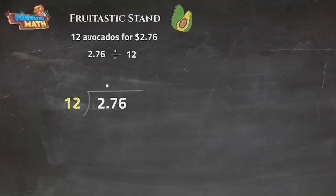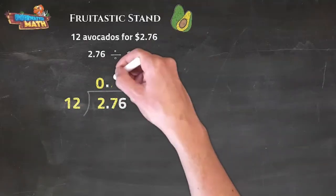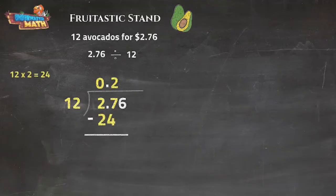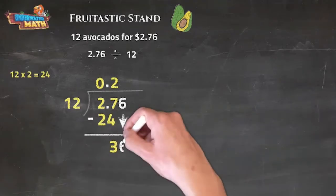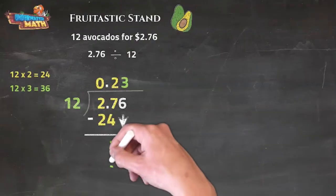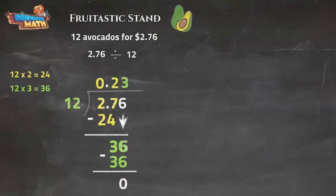Then we divide like normal. When there is a remainder of zero or you have reached a dollar amount in your quotient, you know you are done dividing. We can see here that Fruitastic Stand charges 23 cents per avocado.